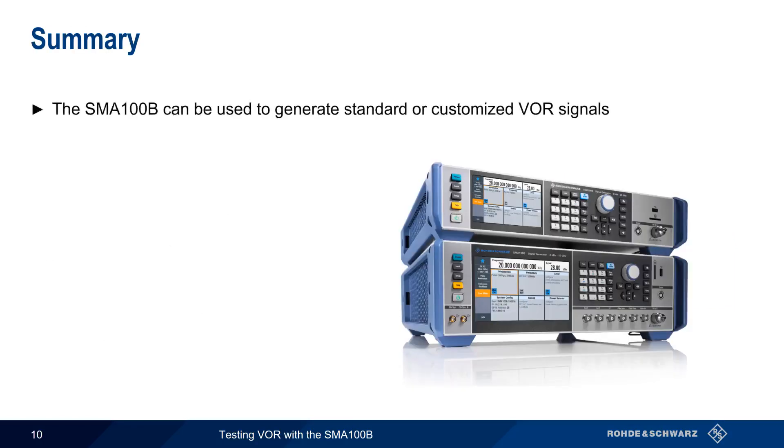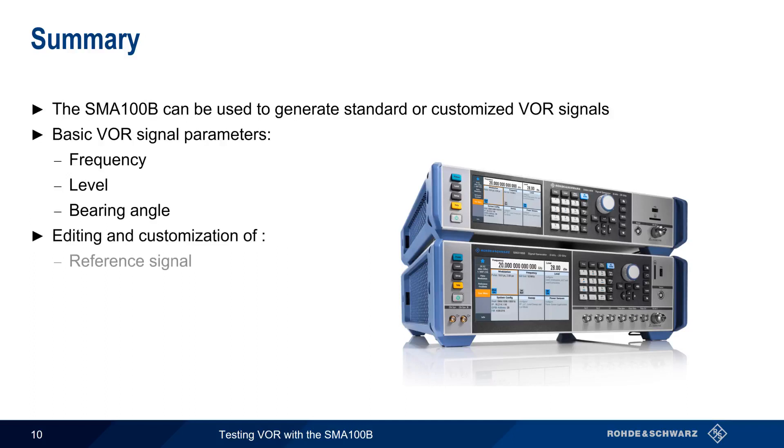In summary, the SMA100B can be used to generate standard or customized VOR signals. The three basic parameters in VOR signal generation are the frequency, level, and the bearing angle or radial. In addition, the various components of the VOR signal can be enabled or disabled or modified. These are the reference signal, the variable signal, and the COMID signal. This concludes our presentation, Testing VOR with the SMA100B.